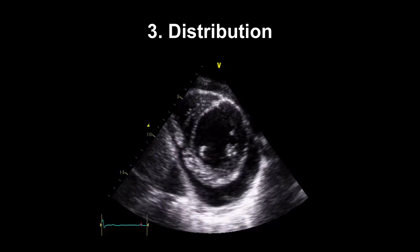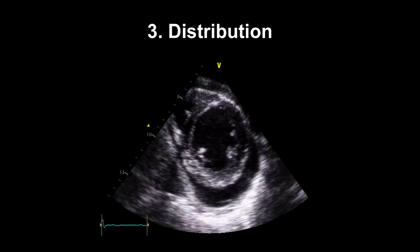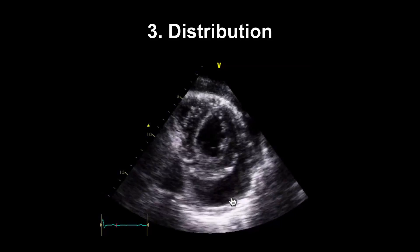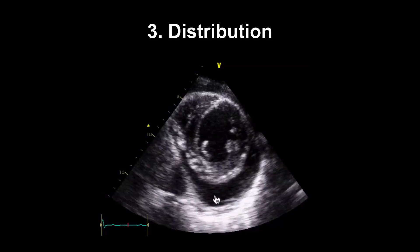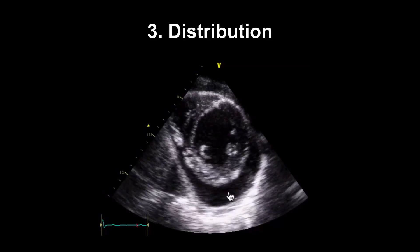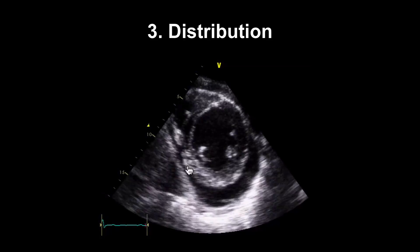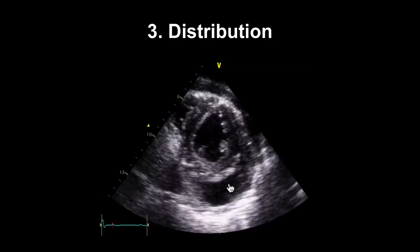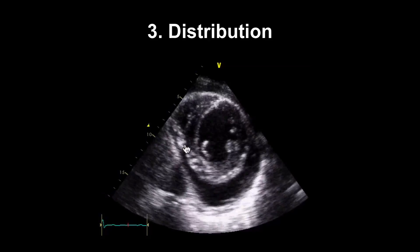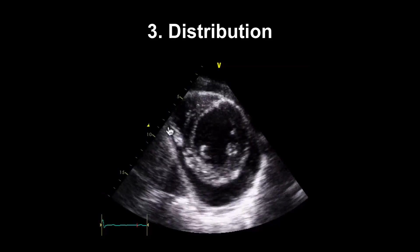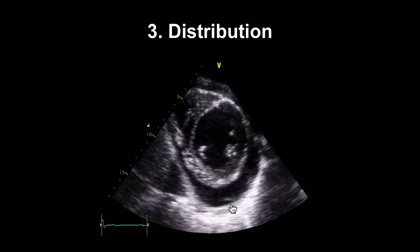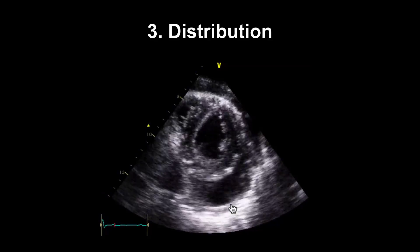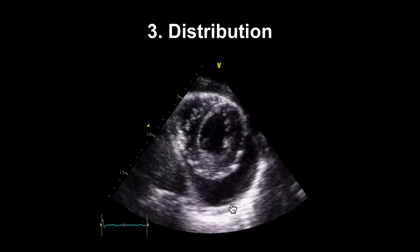We want to think about the distribution of the effusion. They typically start posteriorly — since the patient is likely lying or sitting, fluid collects at the back of the heart — but as the effusion worsens it creeps upwards and surrounds the heart anteriorly. It's also worth noting whether the patient has a loculated effusion with pockets, or whether it is all linked together, because that affects drainage: you don't want to get stuck in a pocket and be unable to drain the full amount of fluid.